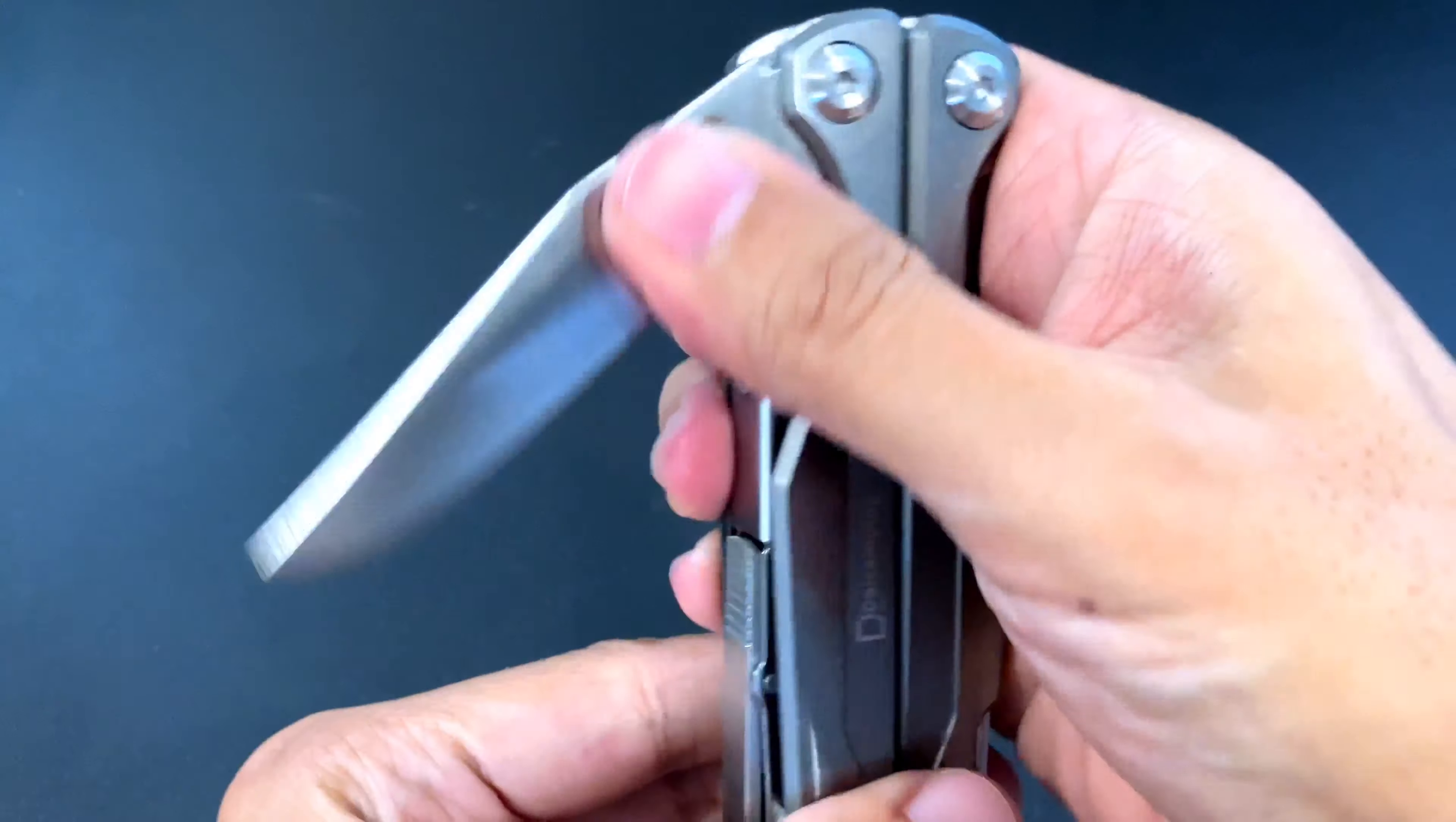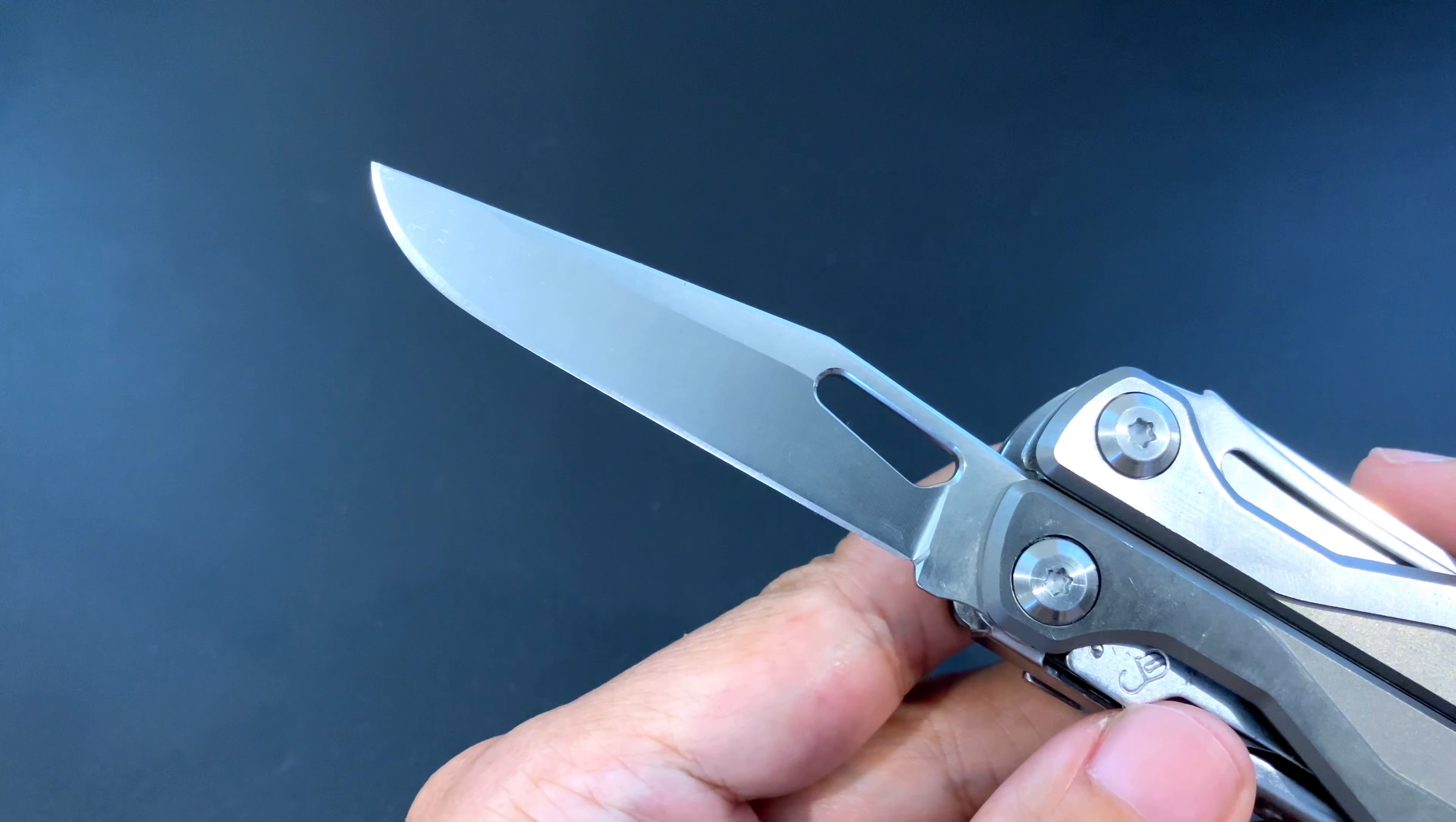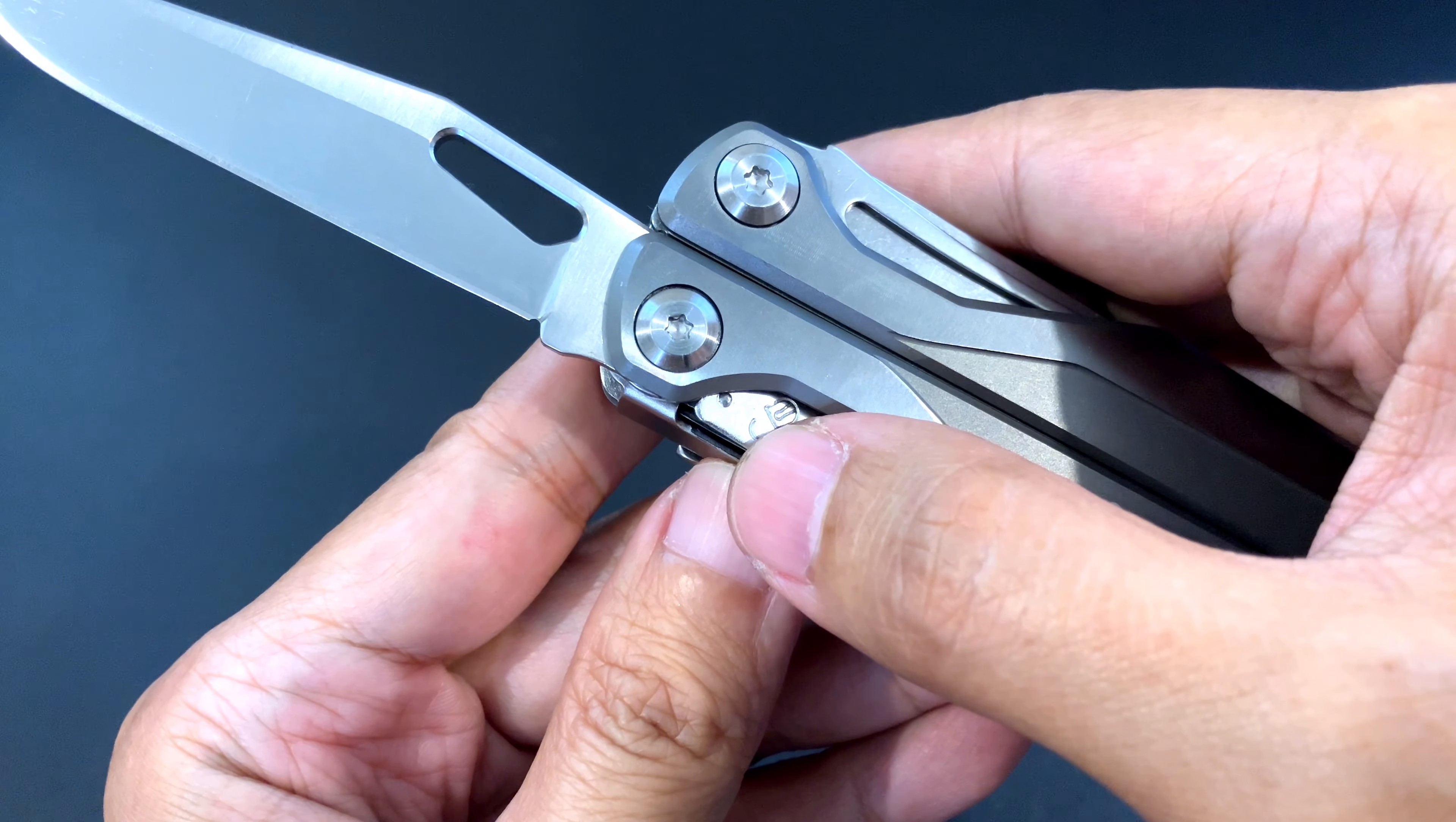On the outside we have these tools. It's still a little bit stiff but it should break in with use. We have a plain edge knife. It's a familiar shape, it's got a thumb opening hole that is chamfered here, and then it's locked using this liner lock. To unlock it you just press it.